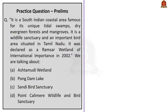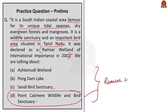Question 2 is a description-based question: It is a south Indian coastal area famous for its unique tidal swamps, dry evergreen forests and mangroves; it is a wildlife sanctuary and an important bird area situated in Tamil Nadu, declared as a Ramsar Wetland of International Importance in 2002. Options are: A — Ashtamudi Wetland, B — Pong Dam Lake, C — Sandhi Bird Sanctuary, D — Point Kalamir Wildlife and Bird Sanctuary. The correct answer is option D. All four are Ramsar sites — Ashtamudi is from Kerala, Pong Dam from Himachal Pradesh, Sandhi Bird Sanctuary from Uttar Pradesh, and the only Ramsar site from Tamil Nadu is Point Kalamir.